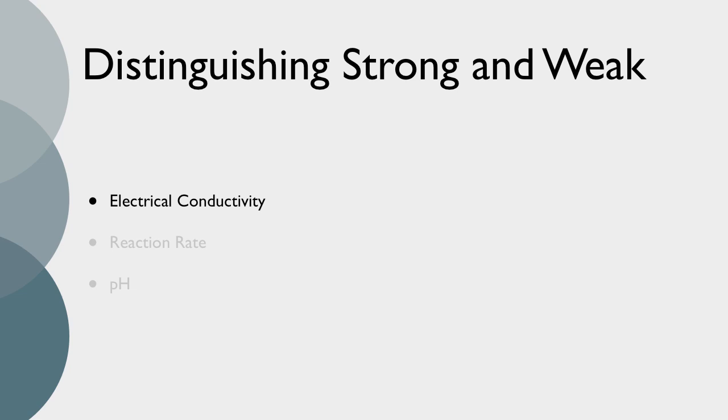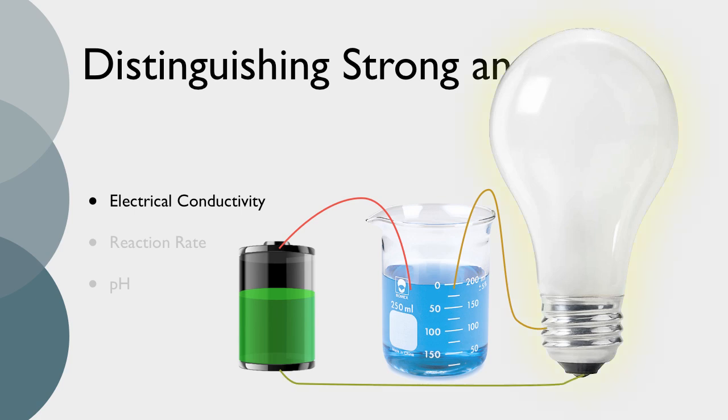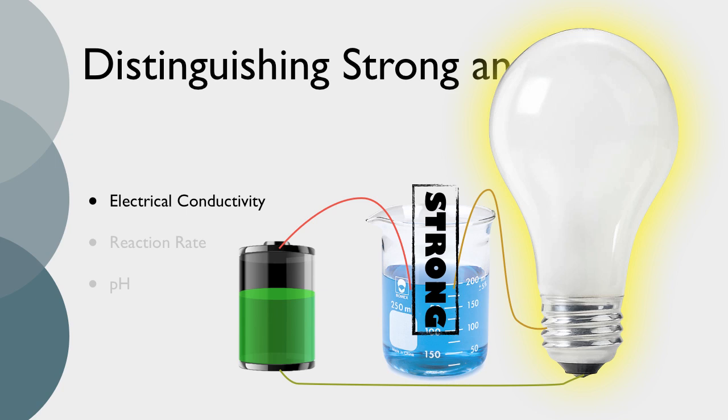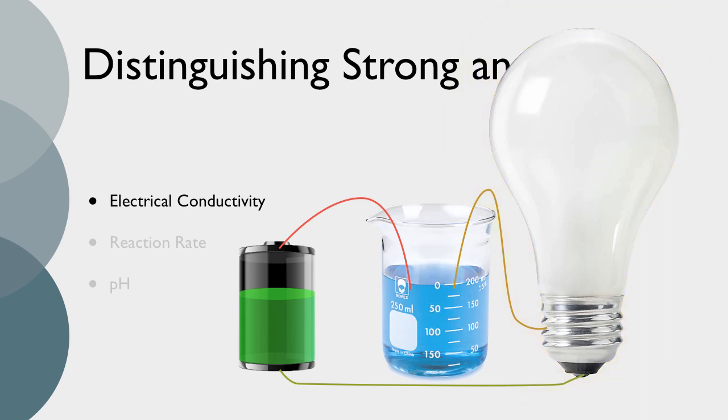Well, acids and bases, by definition, do dissociate in water. If they conduct electricity very well, then that's a sign that it's a strong acid or base. If they conduct electricity only mildly, then it's a weak acid or base.